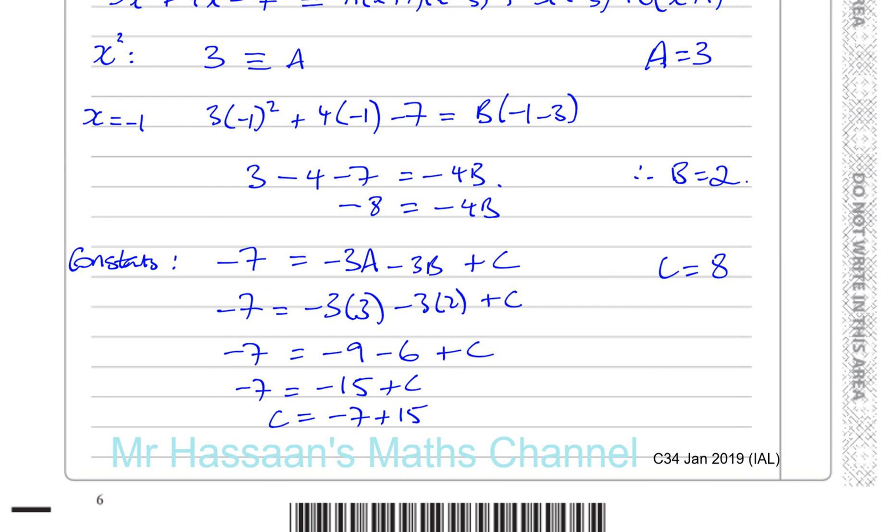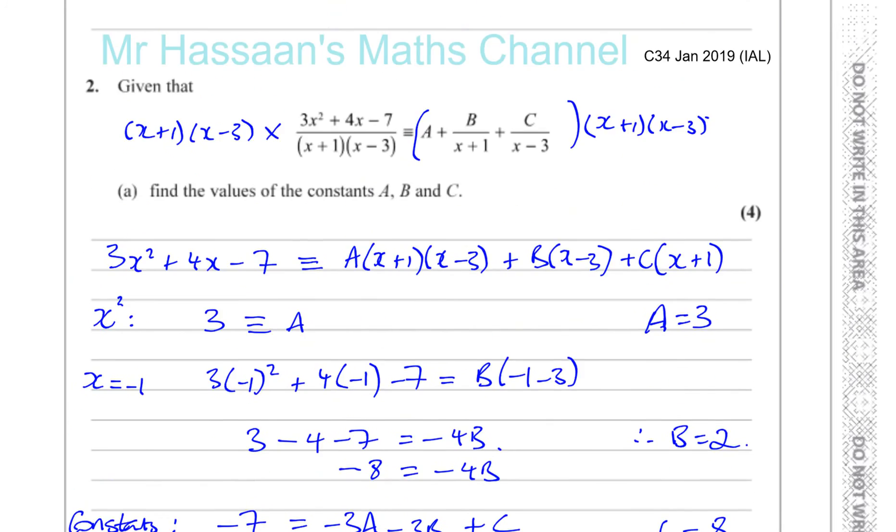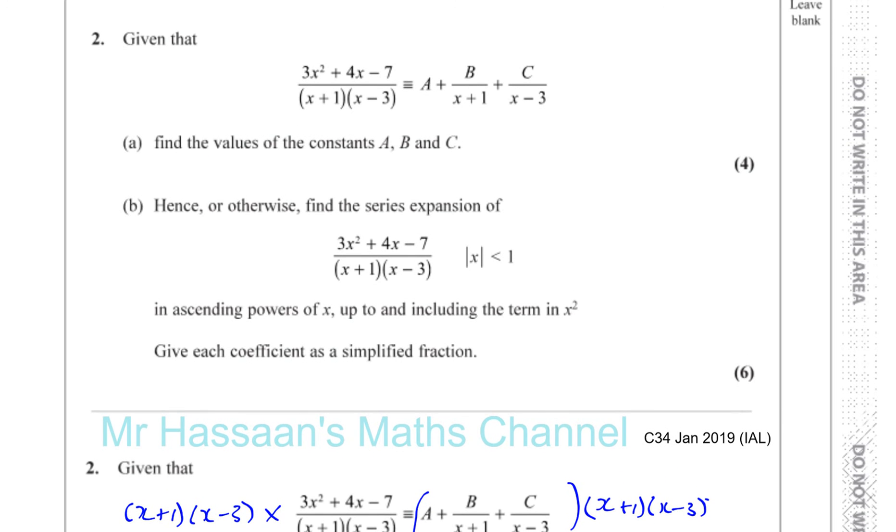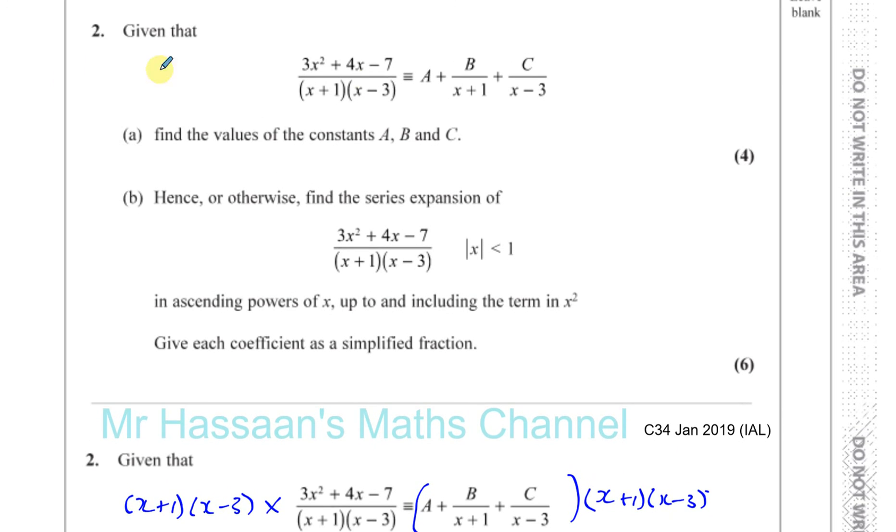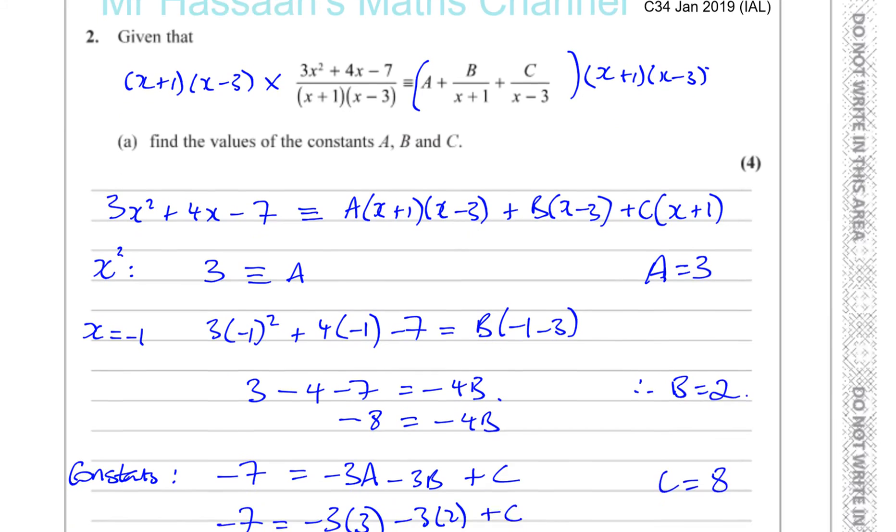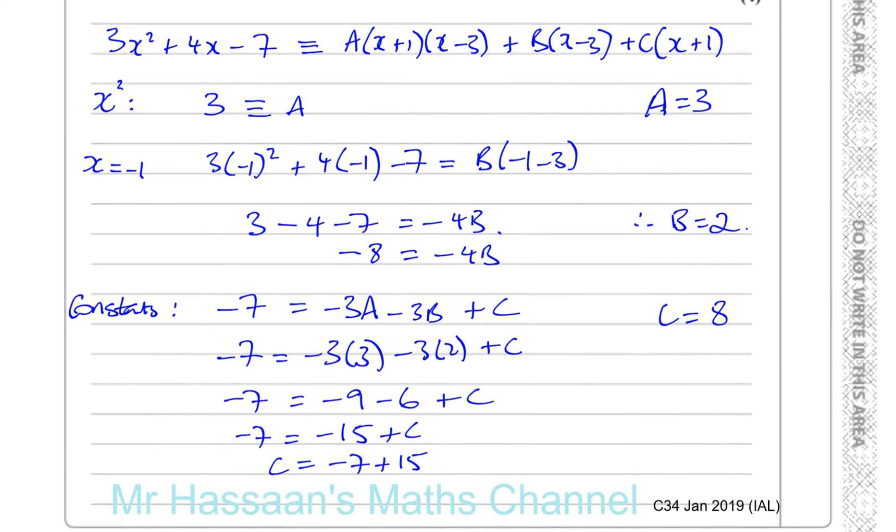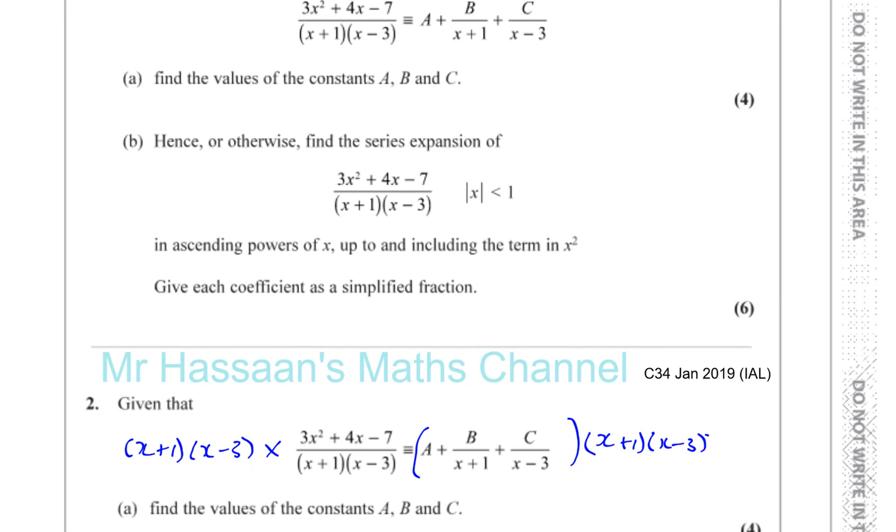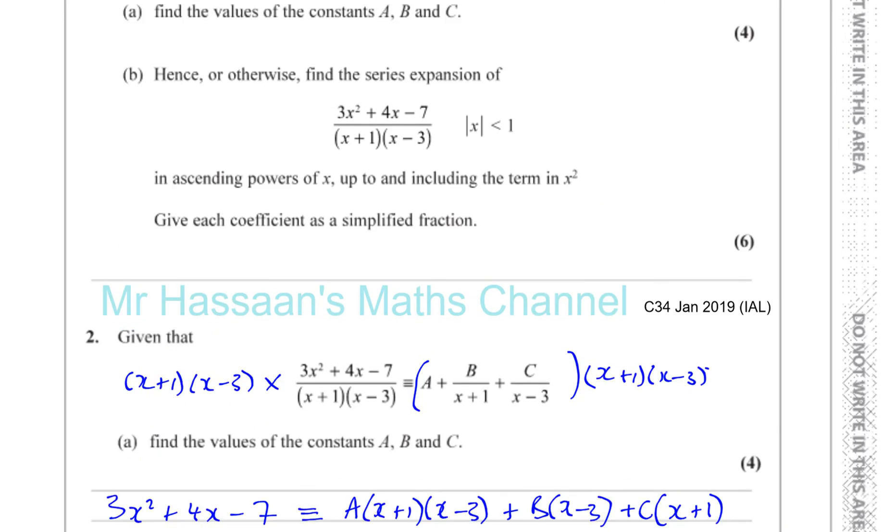The question asked us to find the values of A, B, and C. It didn't ask us to write it out in this form, we just find the values. So we can say A is 3, B is 2, and C is 8. There we've answered question 2 part A. I'll do part B on a separate video.